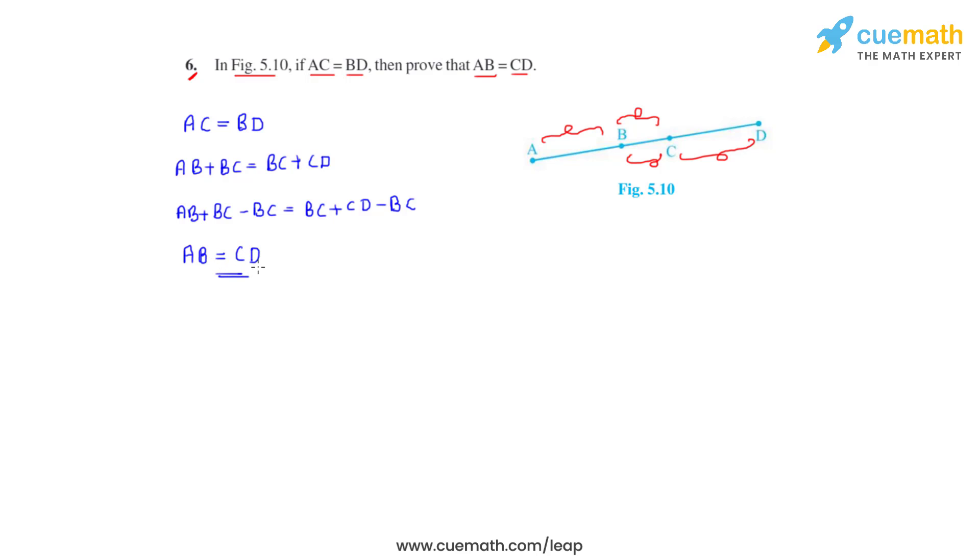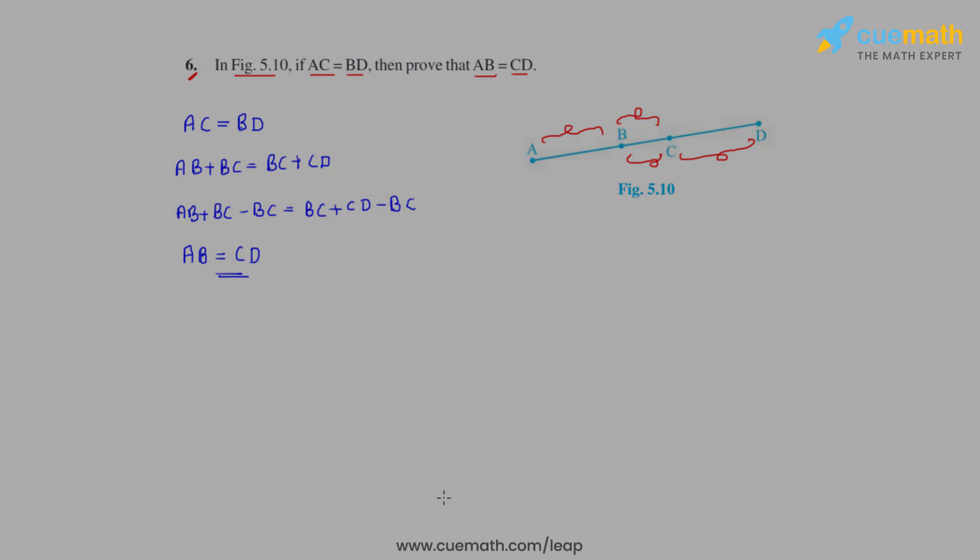Now this could have also been derived from the information that we know that when equals are subtracted from equals then the remainders are also equal. So this is how we solve this problem.